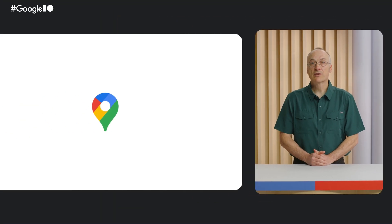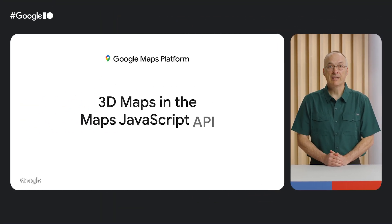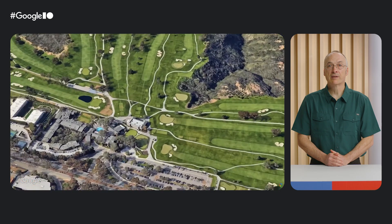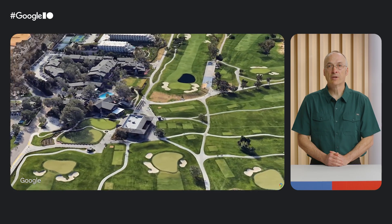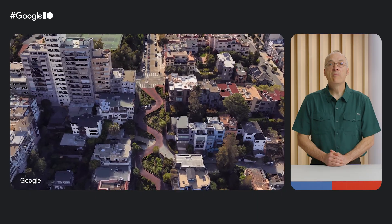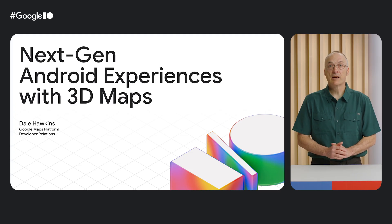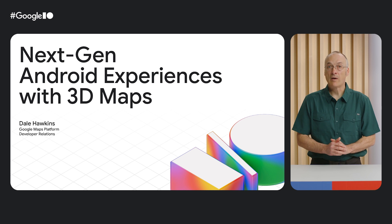Last year at I/O, we launched 3D maps in the Maps JavaScript API, marking the first time we combined Google's high-fidelity, photorealistic 3D maps with our rendering technology. We've been amazed with what you've made. Today, we're excited to share with you a significant leap forward for mobile mapping. For the first time ever, we are making Google's photorealistic 3D maps available to you, our Android developers, with Google Maps platform.